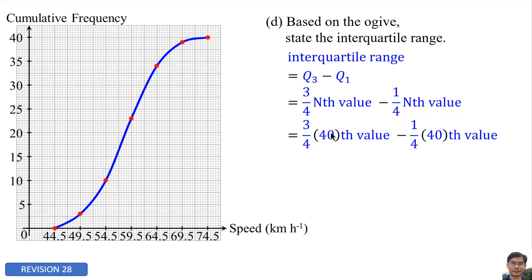So we need to find the 30th value minus the 10th value. The 30th value, based on the ogive from the graph, the speed is 62.5, and this 62.5 is the third quartile. The 10th value, based on the graph, the speed is 44.5, and this 44.5 is the first quartile. So 62.5 minus 44.5, the answer is 8.